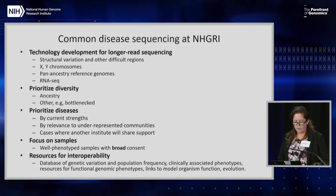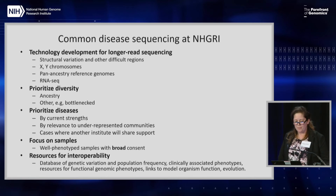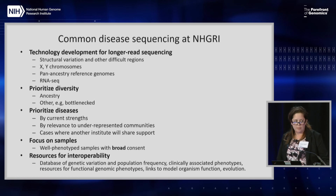In terms of samples, it's really important to have well-phenotyped samples where possible, and broad consent is going to be important for many of the things we've discussed this week. Finally, to reiterate the discussion of interoperability: we talked about having a database with genetic variation and population frequency — really, the database we all wish existed — with clinically associated phenotypes, resources for functional genomic phenotypes linked to model organism function, and also links to evolution and what's known about variants on an evolutionary time scale. I'll stop there and let Anshul move on to some more specific proposals. Thank you.